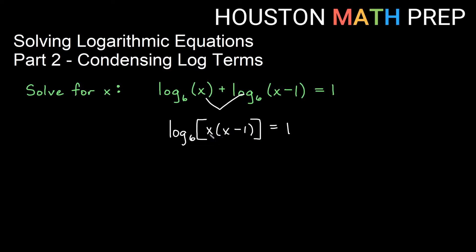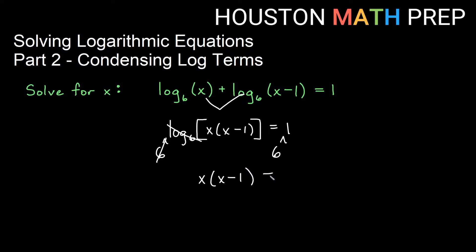Now we have it all in one log term. To solve for x, I need to get rid of log base 6 on the outside. The opposite operation of log base 6 is an exponential base 6. So we take exponential base 6 of both sides — they're inverses, they undo one another. We're left with x times (x minus 1) on the left side, and 6 to the first power, which is 6, on the right side.